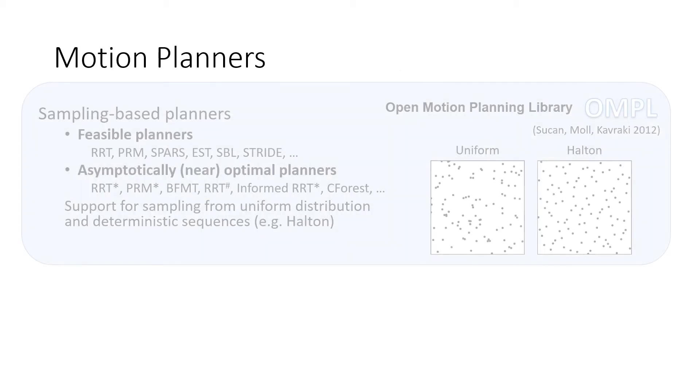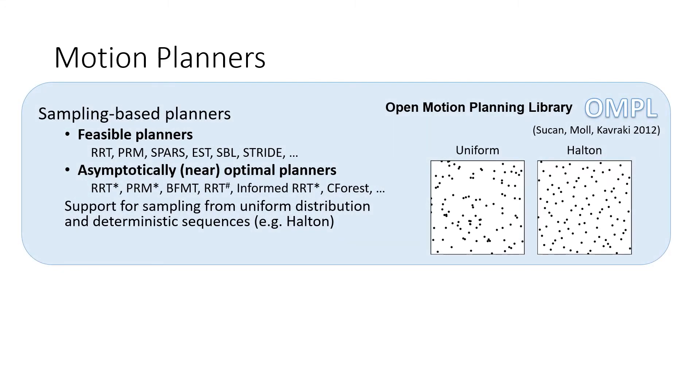At the core of BenchMR are the motion planning algorithms. We support sampling-based motion planners from the Open Motion Planning Library. These include the feasible planners, such as RRT or PRM, as well as asymptotically optimal planners, such as RRT star or PRM star.